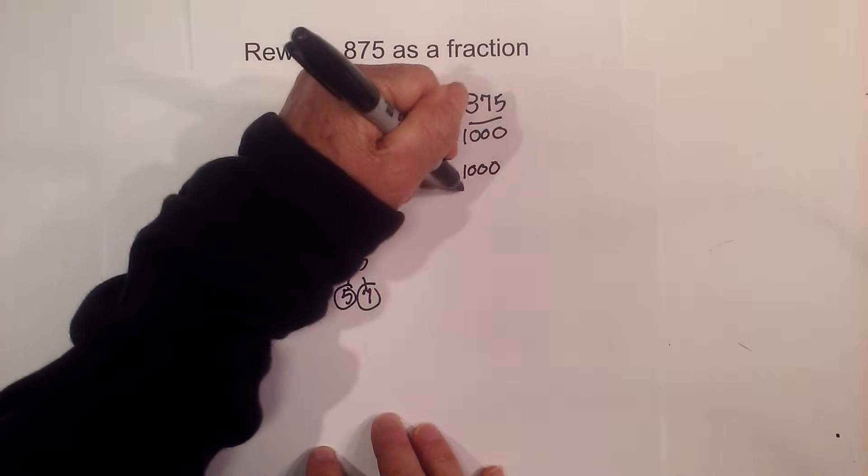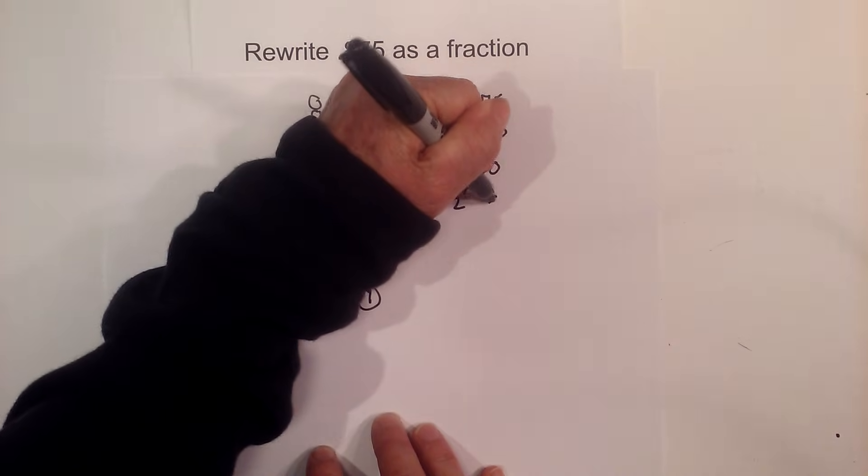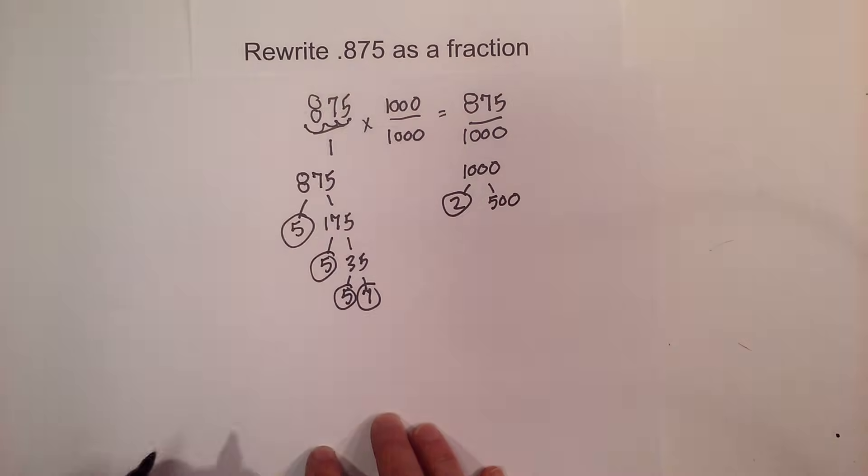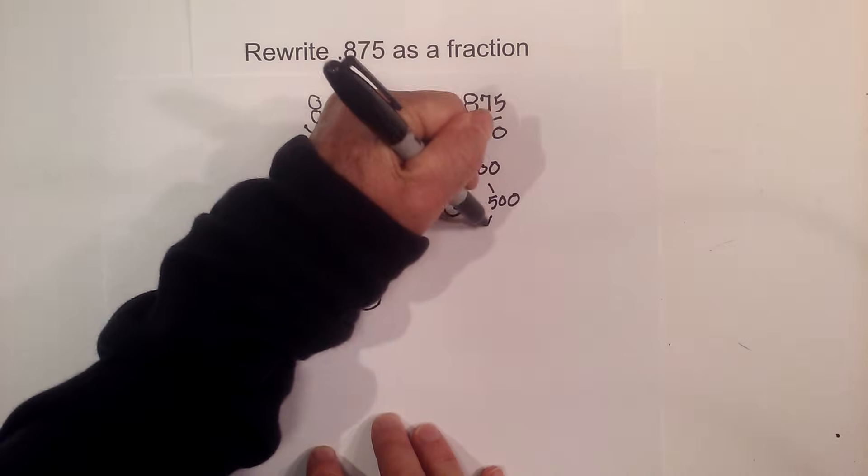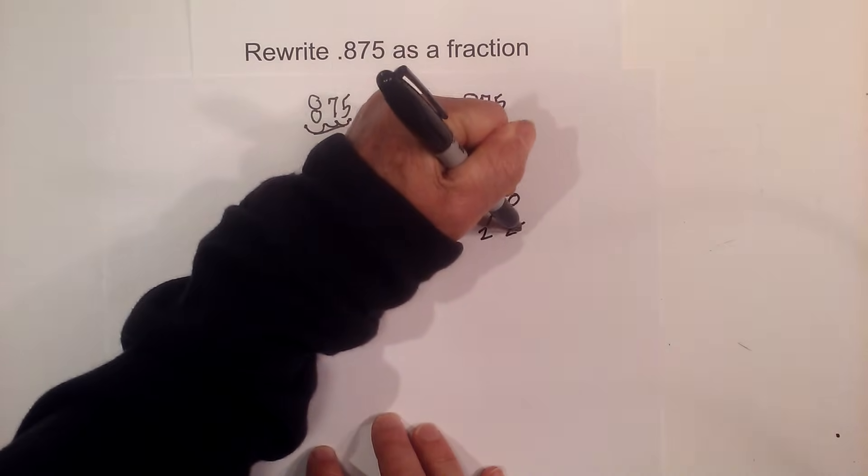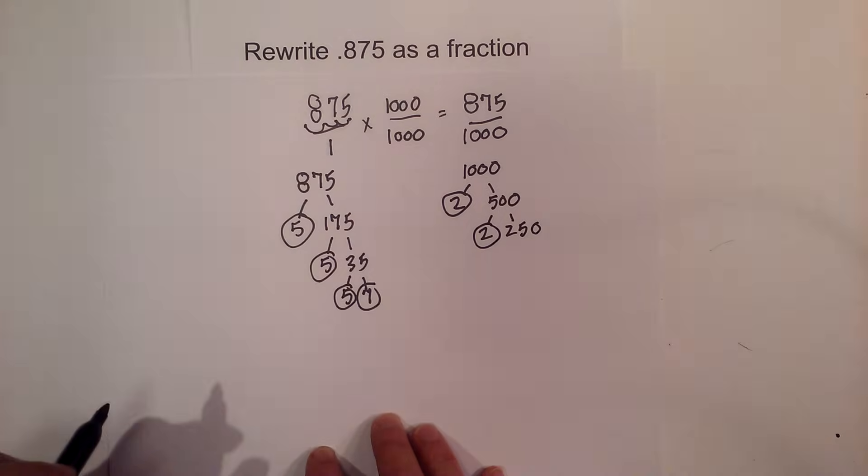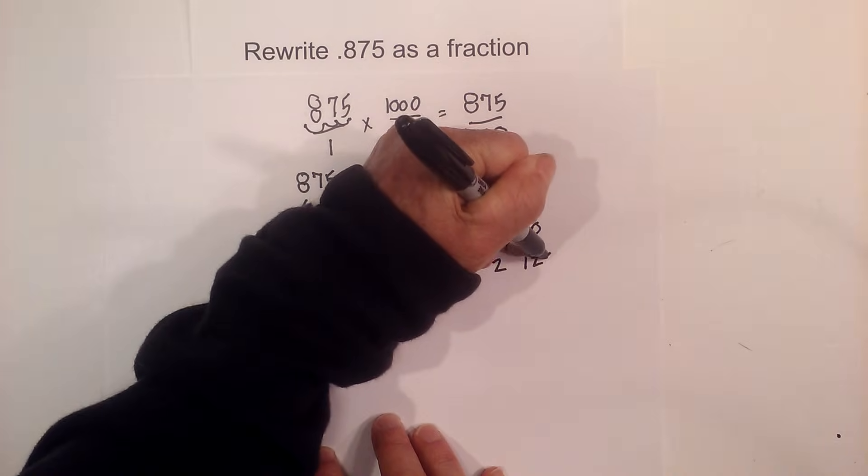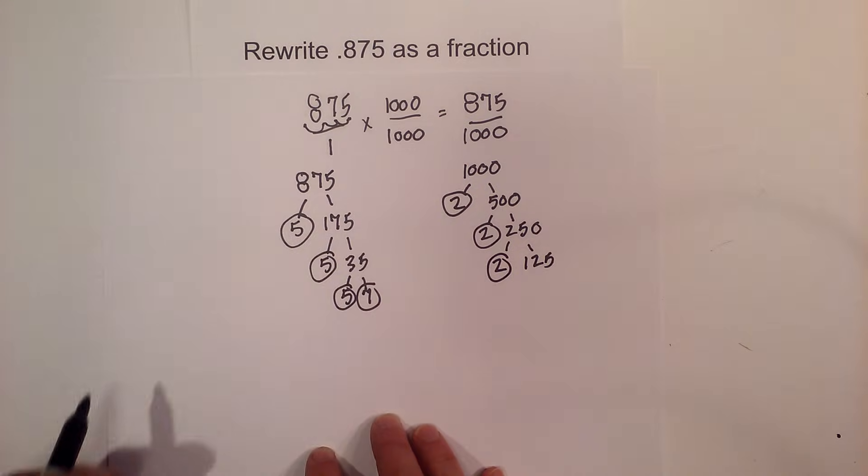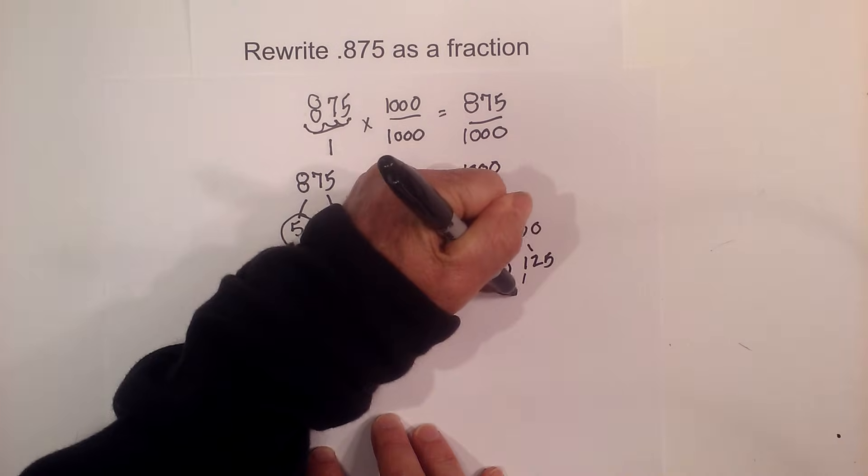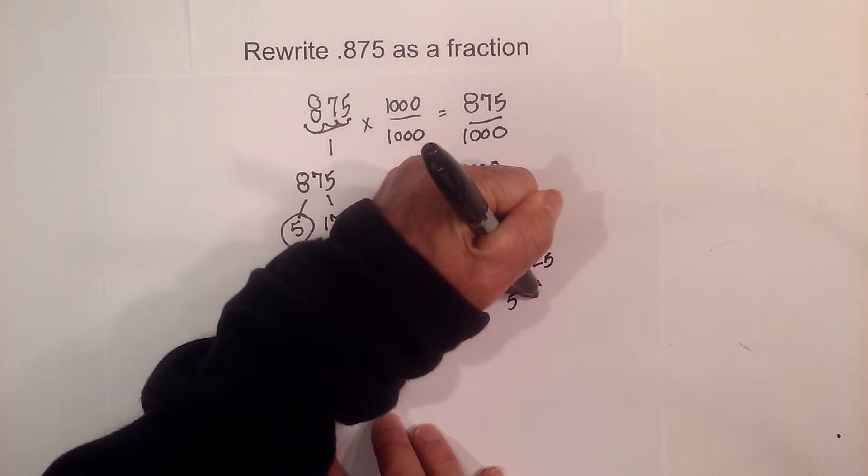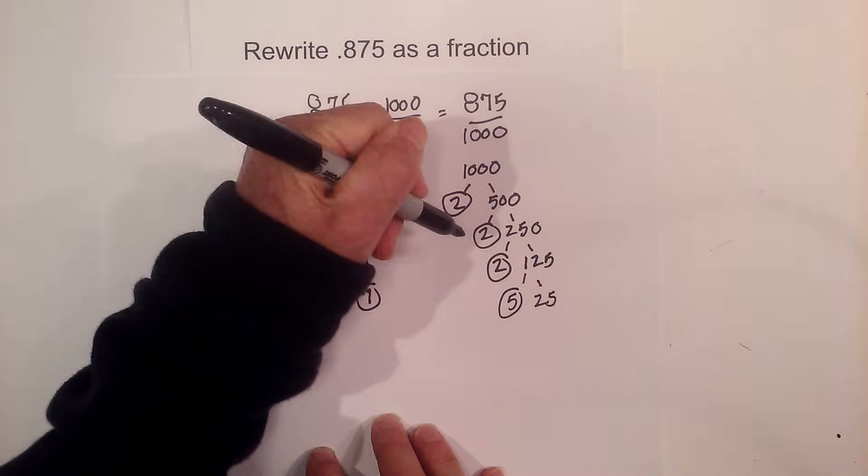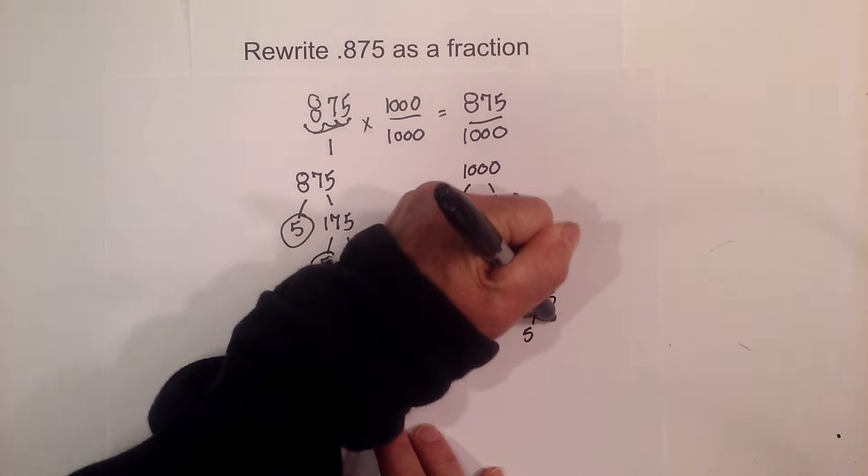For 1,000: 2 times 500 equals 1,000. Circle the 2. Now 2 times 250 equals 500. Circle the 2 because it is prime. Then 2 times 125 equals 250. And then 5 times 25 equals 125, and 5 times 5.